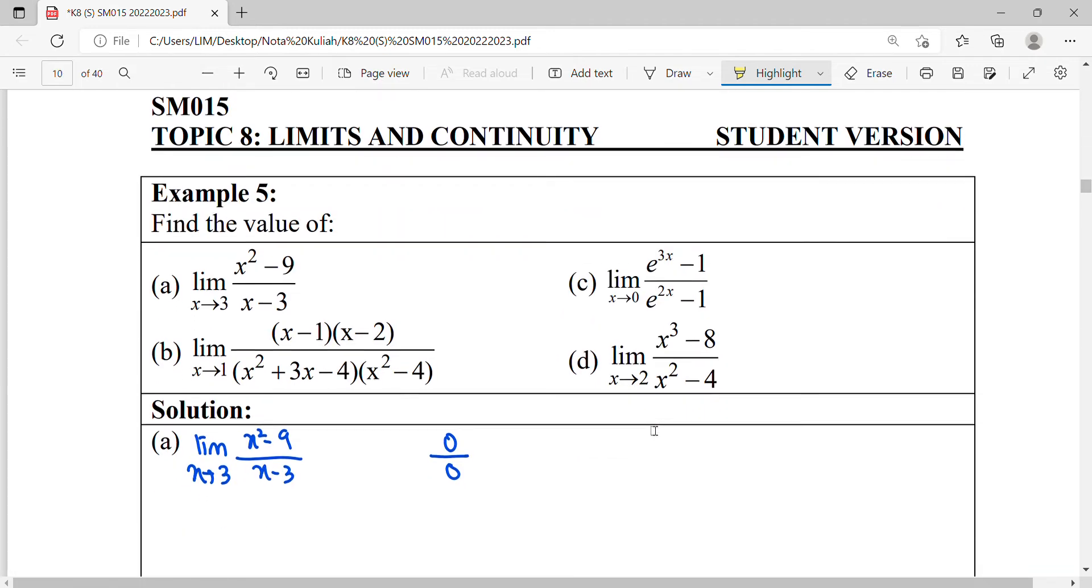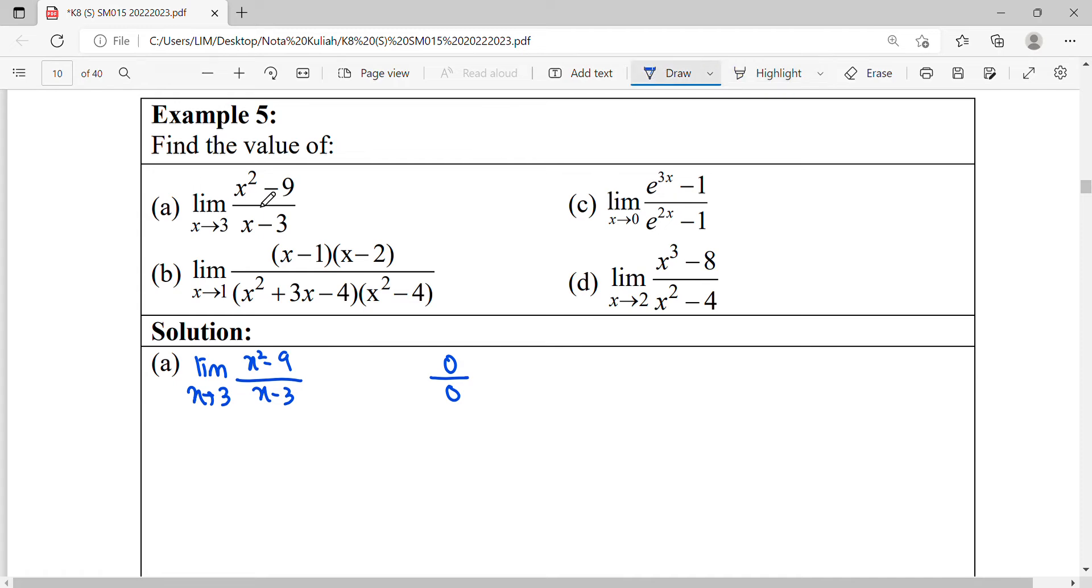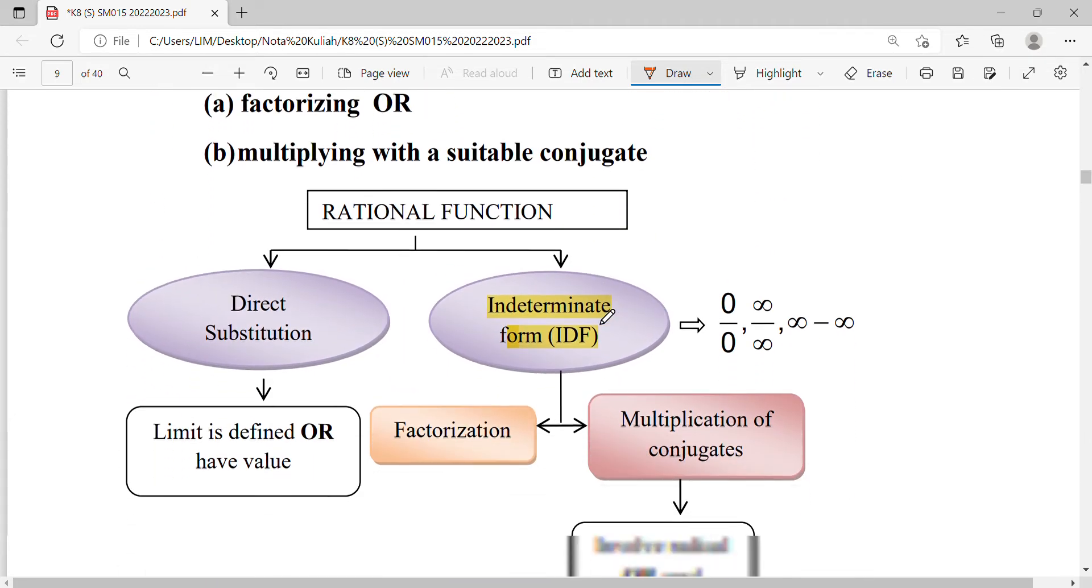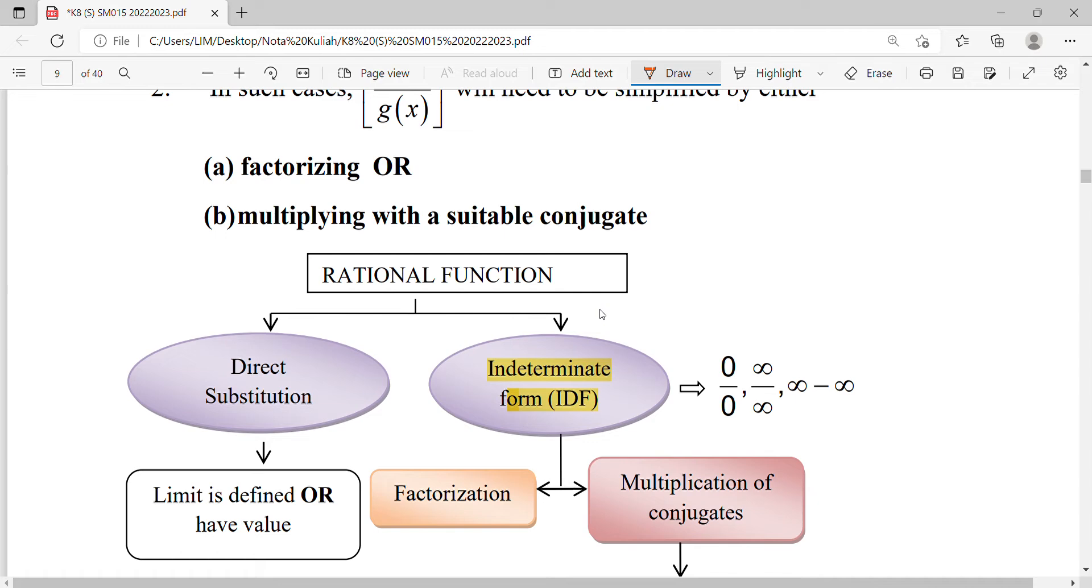When we get this situation 0 over 0, means our function is in indeterminate form. The function is in a form that cannot be determined. So the case of the function is in the form of IDF. So what we're going to do when we meet the function which is IDF, then we figure out the notes here. You're going to factorize or multiply with a suitable conjugate, depends on your function.